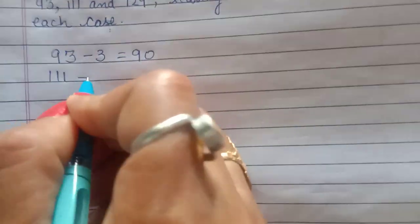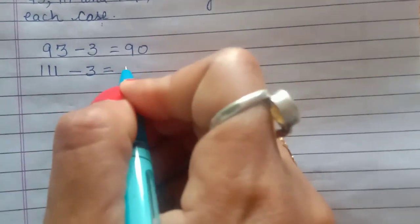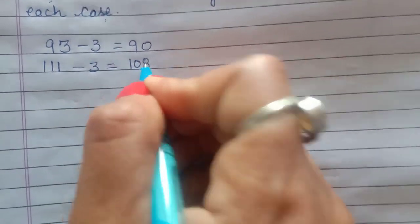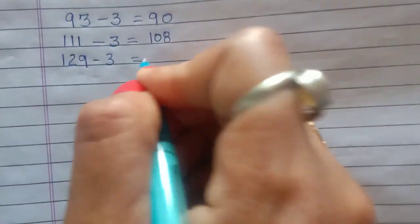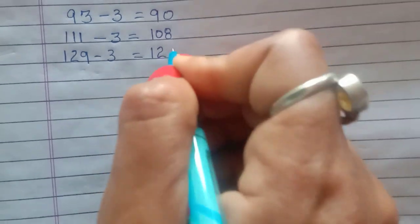Next number is 111. Again subtract 3 from it and you will get 108. Next is 129. Subtract 3 from it and we will get 126.